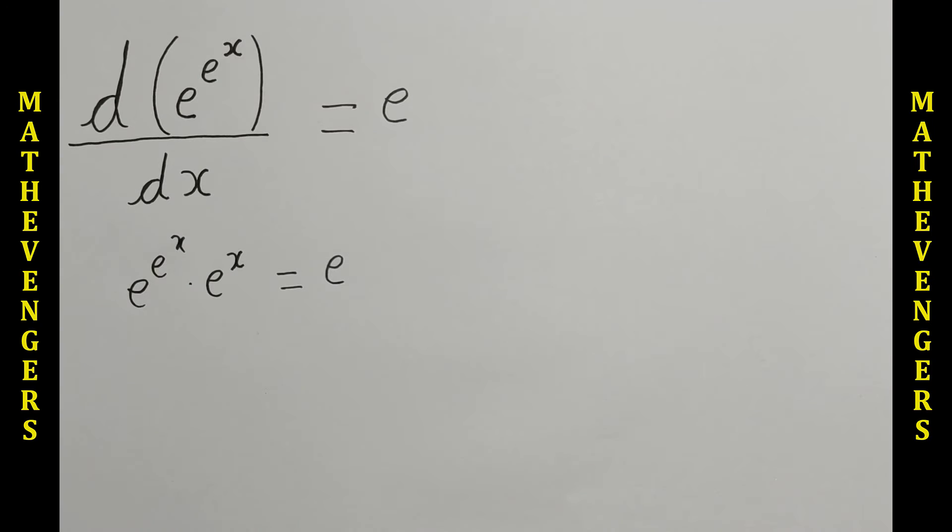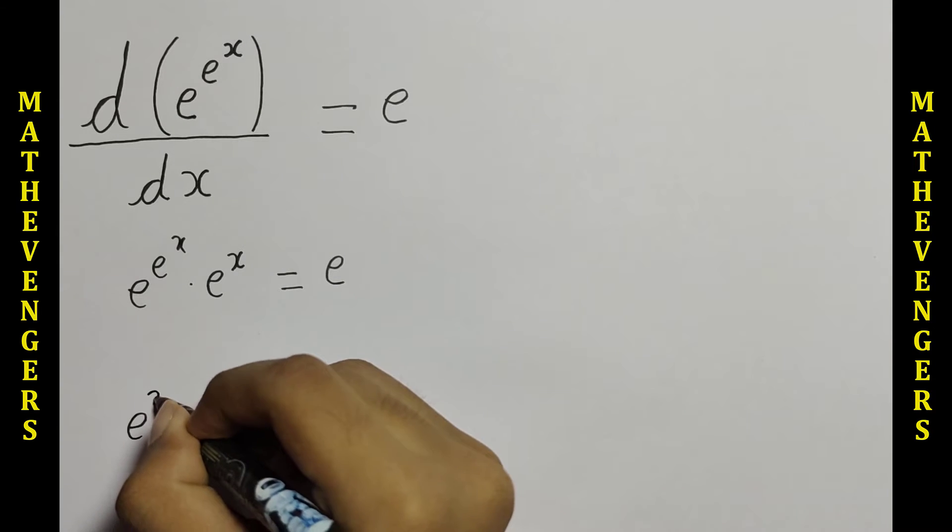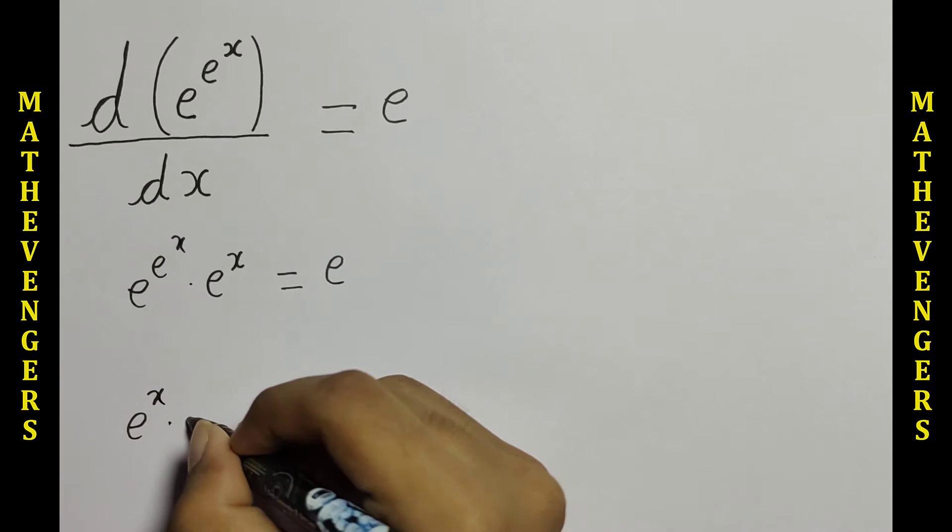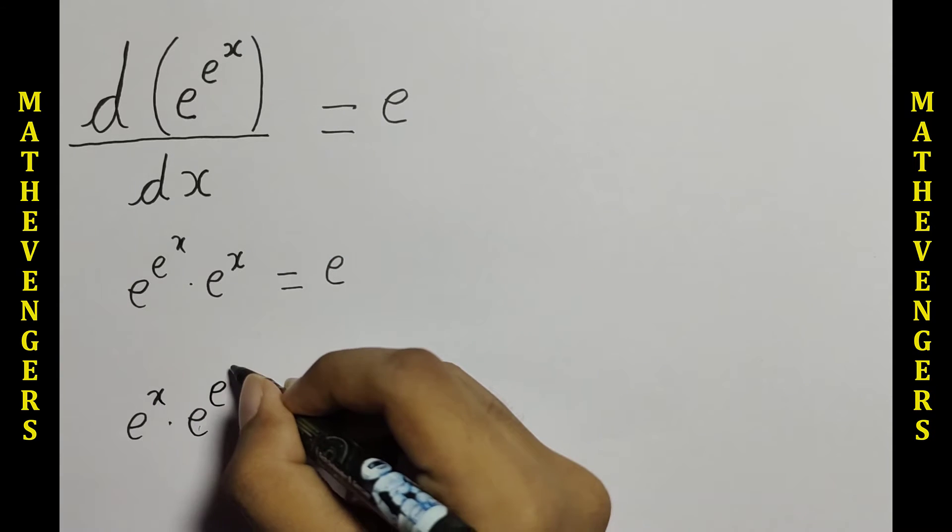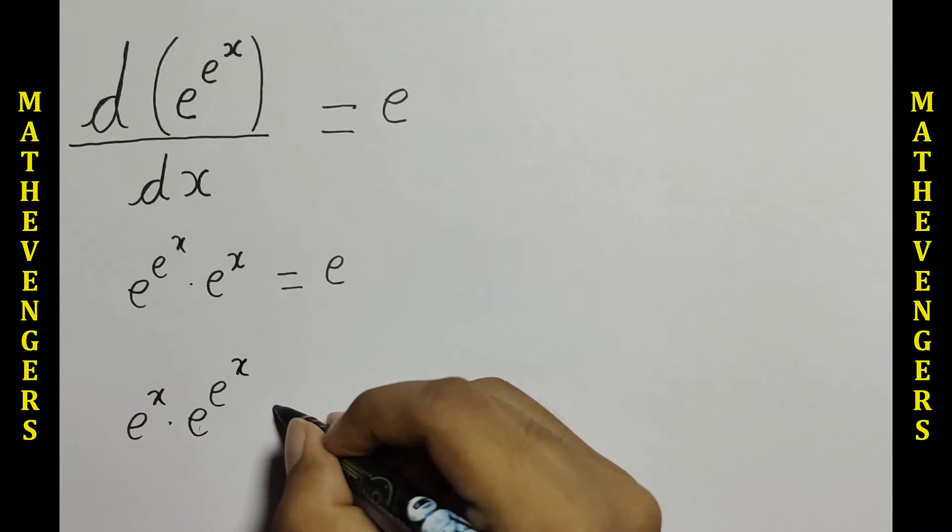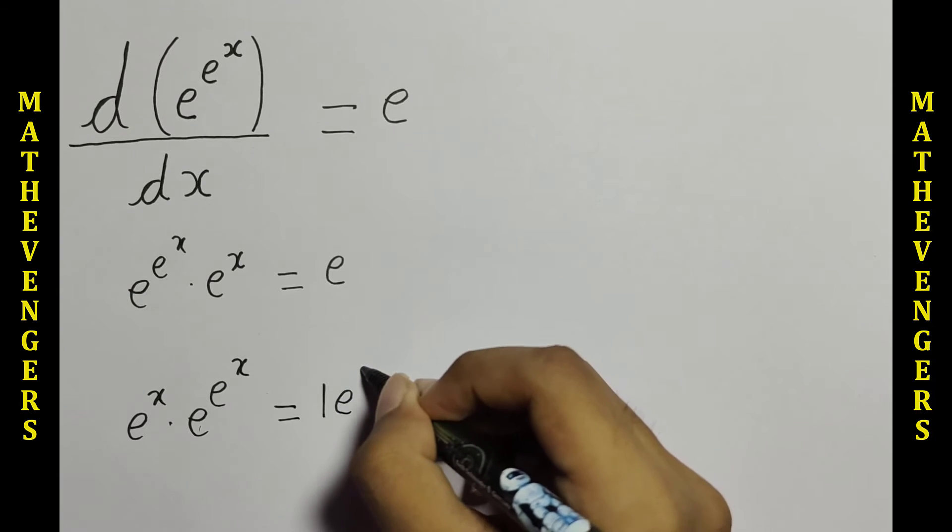Now rewriting this as e to the x times e to the e to the x equals 1 times e to the 1.